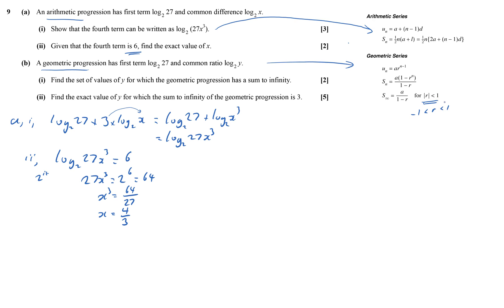So part B, the first part, it says the common ratio log to base 2 of y has got to be less than 1 or minus 1 has got to be less than it.